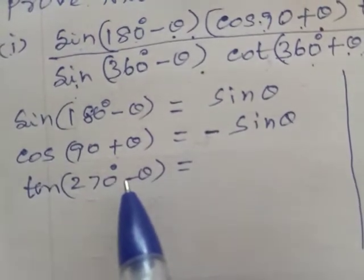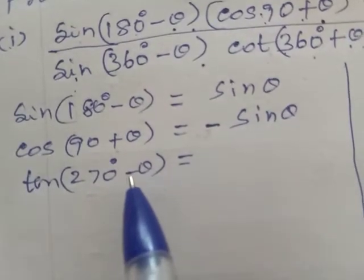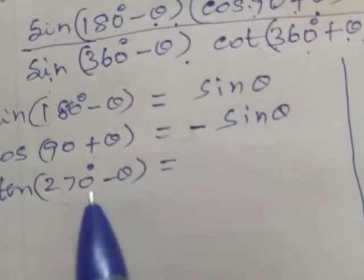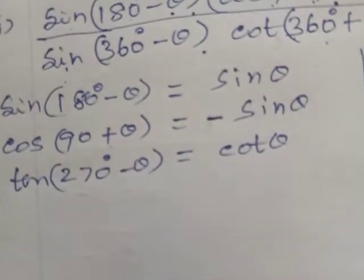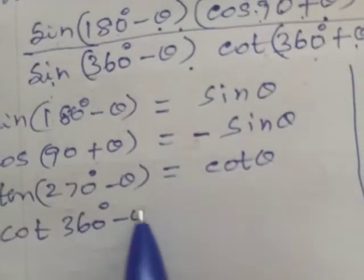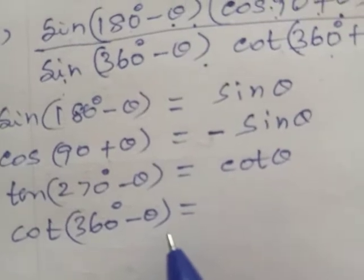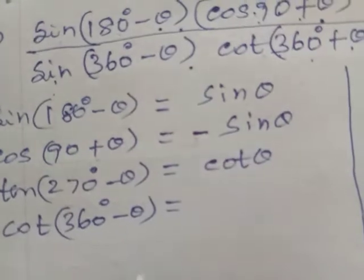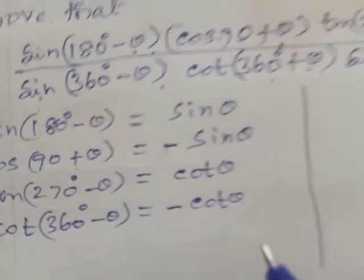For Cos(360-θ), since 360-θ is in the fourth quadrant, and in the fourth quadrant cosine is positive, Cos(360-θ) equals Cos θ. So the numerator values are: Sin θ, minus Sin θ, minus Cos θ, and Cos θ.